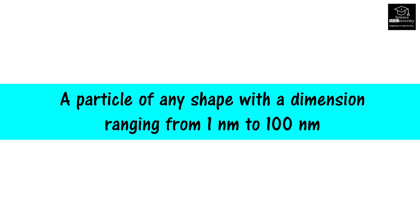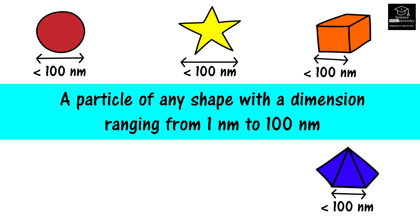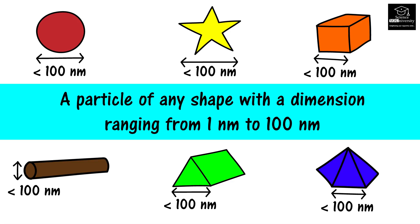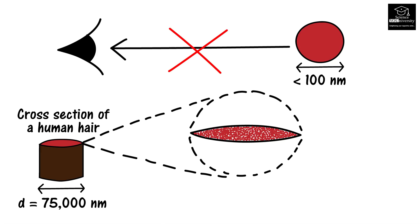According to the International Union of Pure and Applied Chemistry, a particle of any shape with a dimension ranging from 1 nanometer to 100 nanometers can be identified as a nanoparticle. Do you know how small they are? You cannot see nanoparticles with your naked eye. More than 500,000 nanoparticles can sit on a cross-section of a human hair.